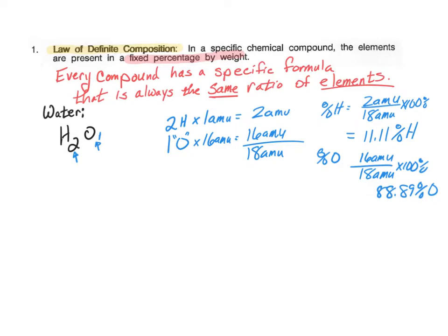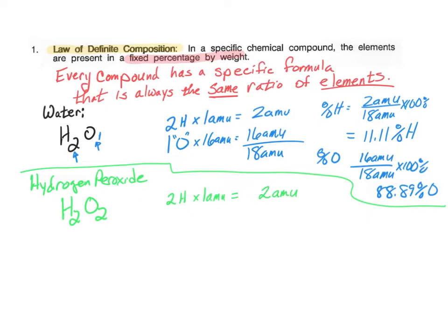We can do the same thing for oxygen. We would see that we have 16 amu divided by 18 amu total times 100%, and you get 88.89% oxygen. So this is the ratio of hydrogen to oxygen that we find in water throughout our world and any other world. Are there other ways that hydrogen and oxygen can come together? Well, there could be. We could have H2O2, which is called hydrogen peroxide. If we were looking at the definite composition of hydrogen peroxide, and we wanted to find the percentages, we would see that in this formula, we have two hydrogens for 2 amu, and two oxygens for 32 amu, which means we have a total of 34 amu.